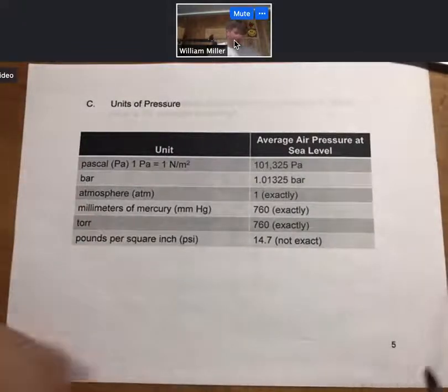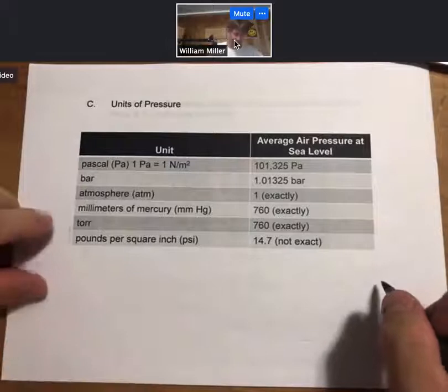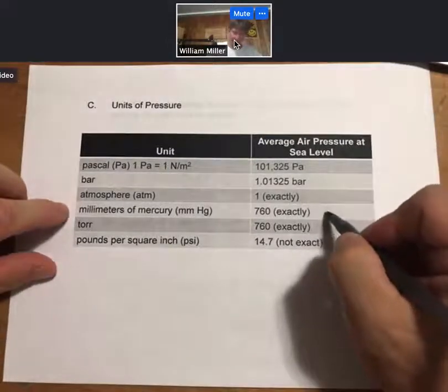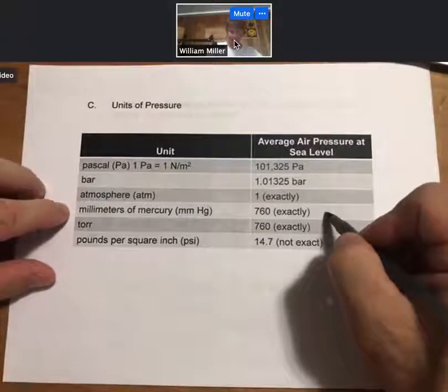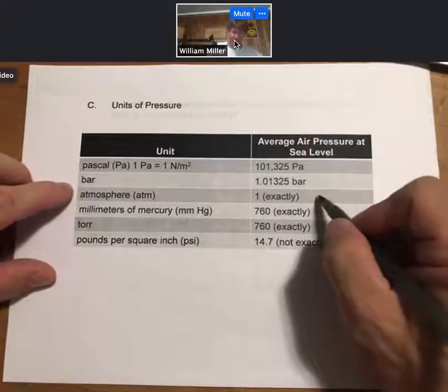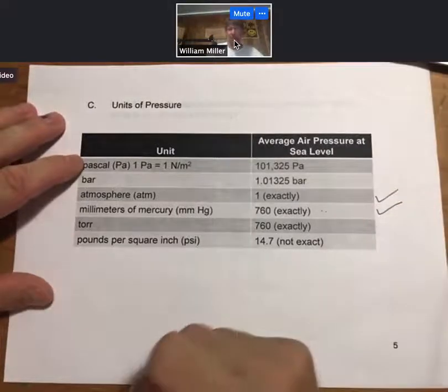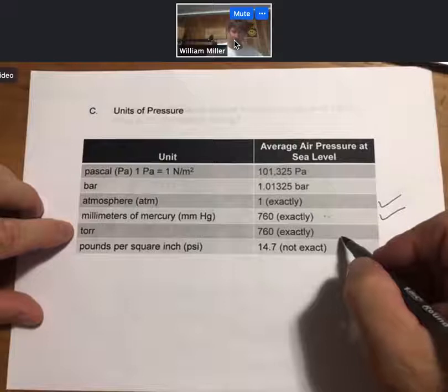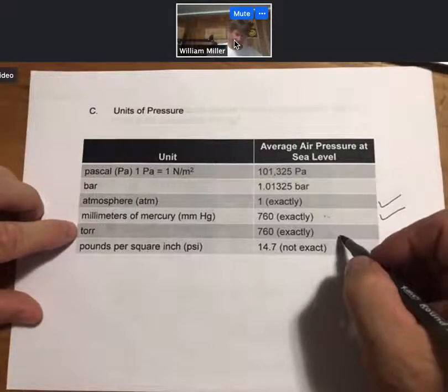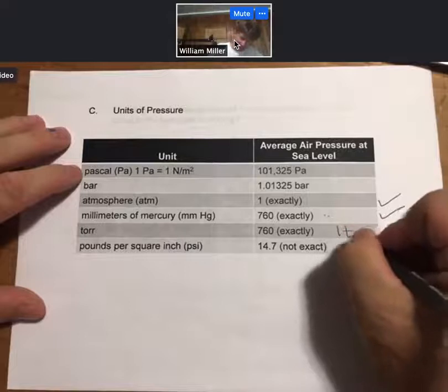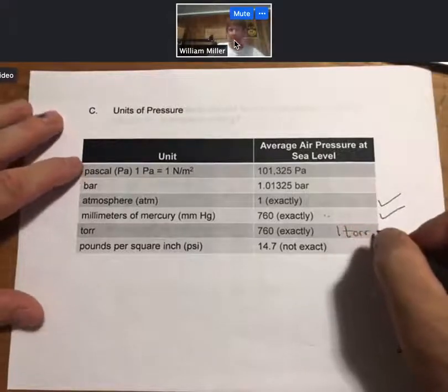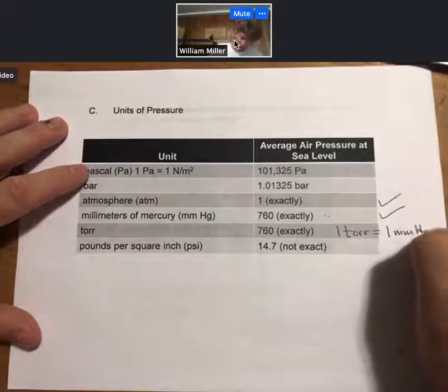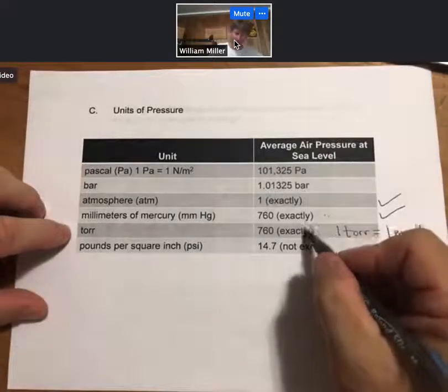As far as units of pressure, we can see the atmosphere here, and it is exactly equal to 760 millimeters of mercury. Millimeters of mercury and atmospheres tend to be the two most common units of pressure that I use in my class. You'll also see torr, and the torr is defined in honor of Torricelli. One torr equals one millimeter of mercury. That's why these two numbers are the same.